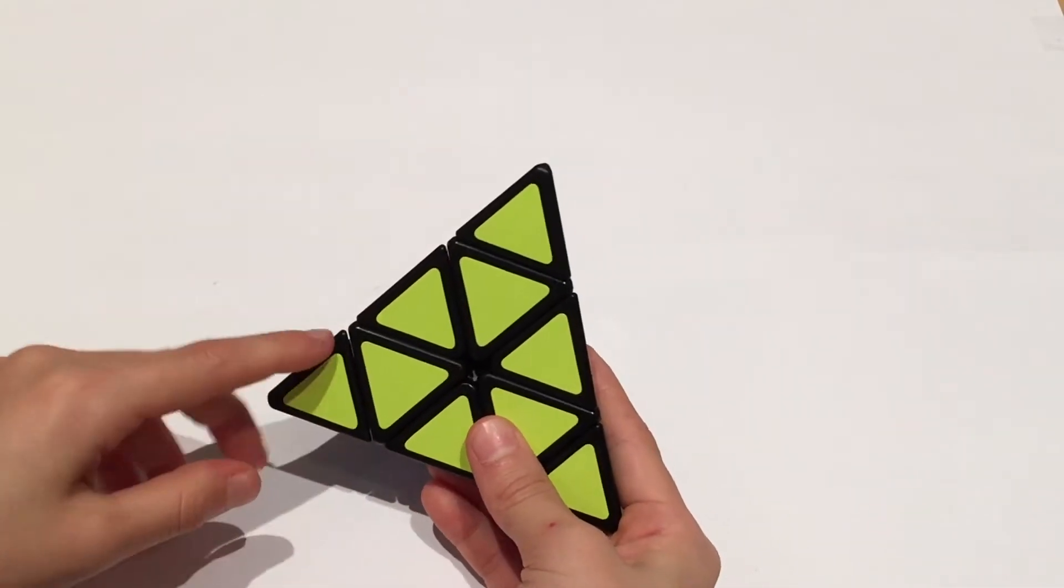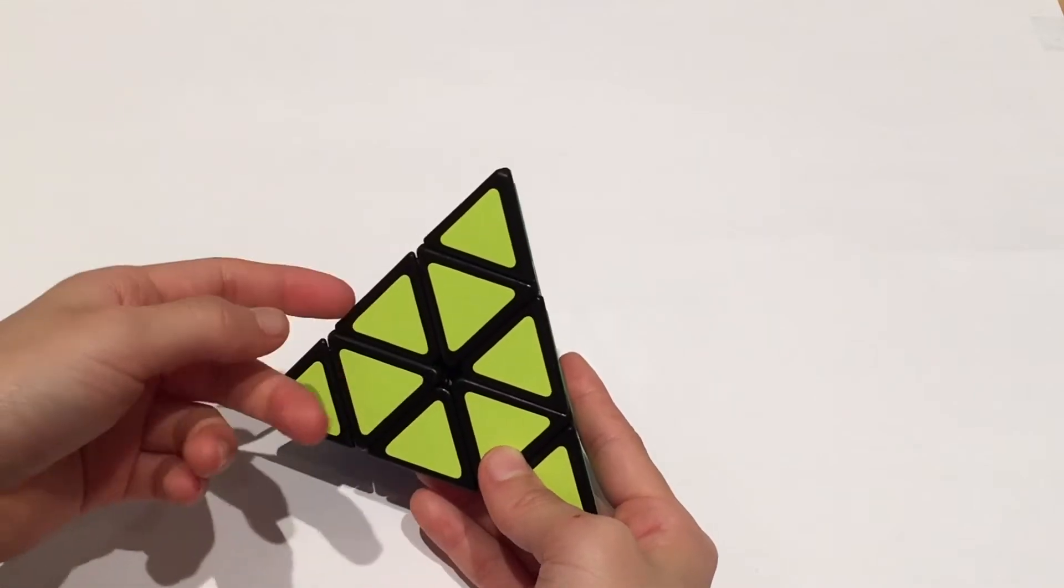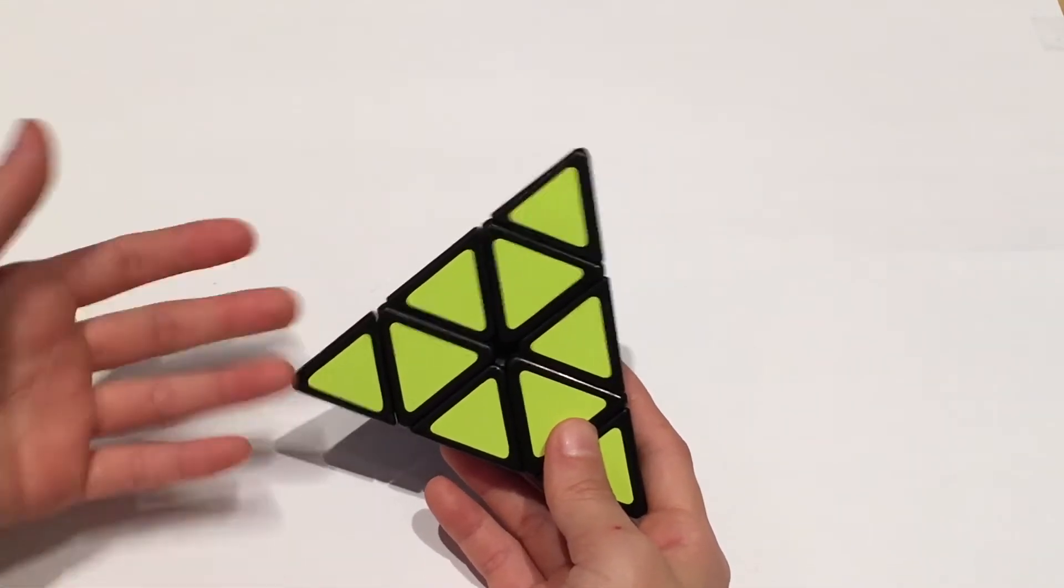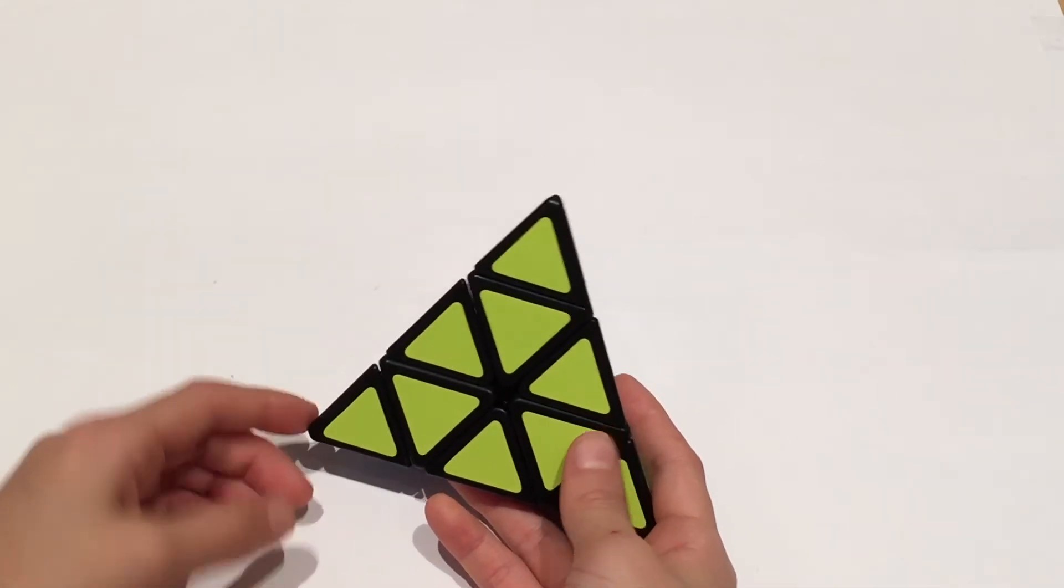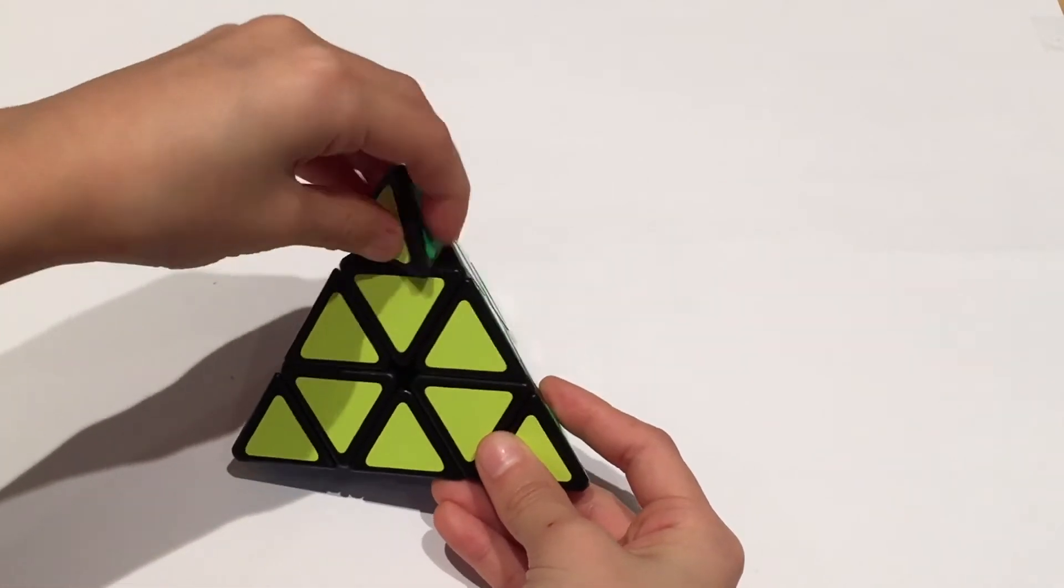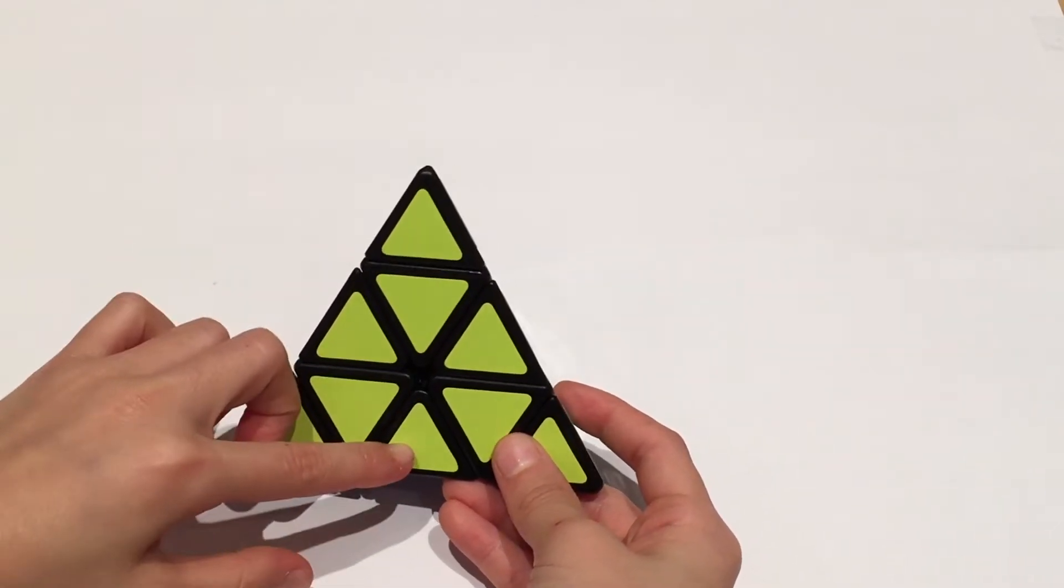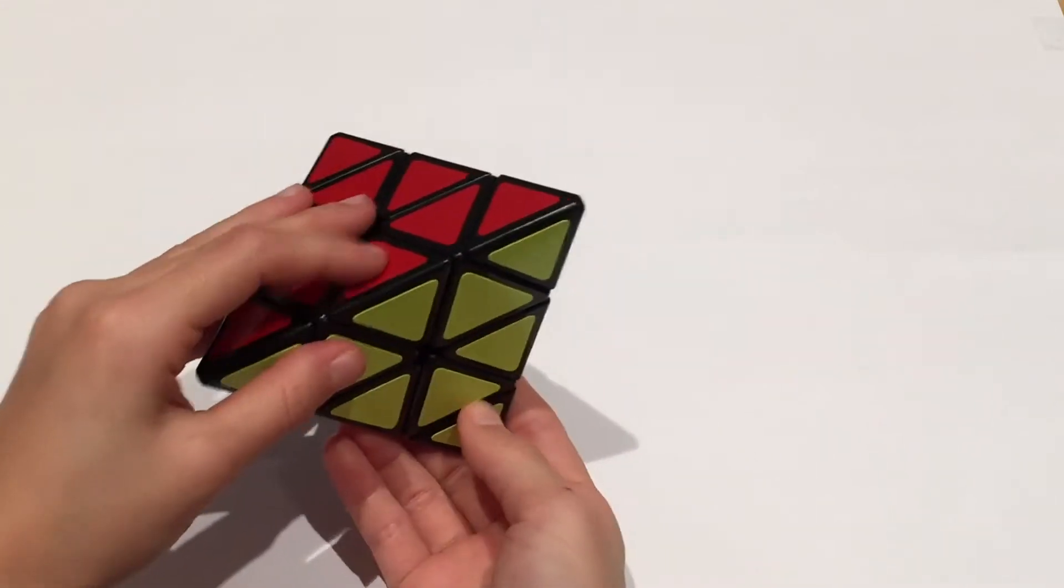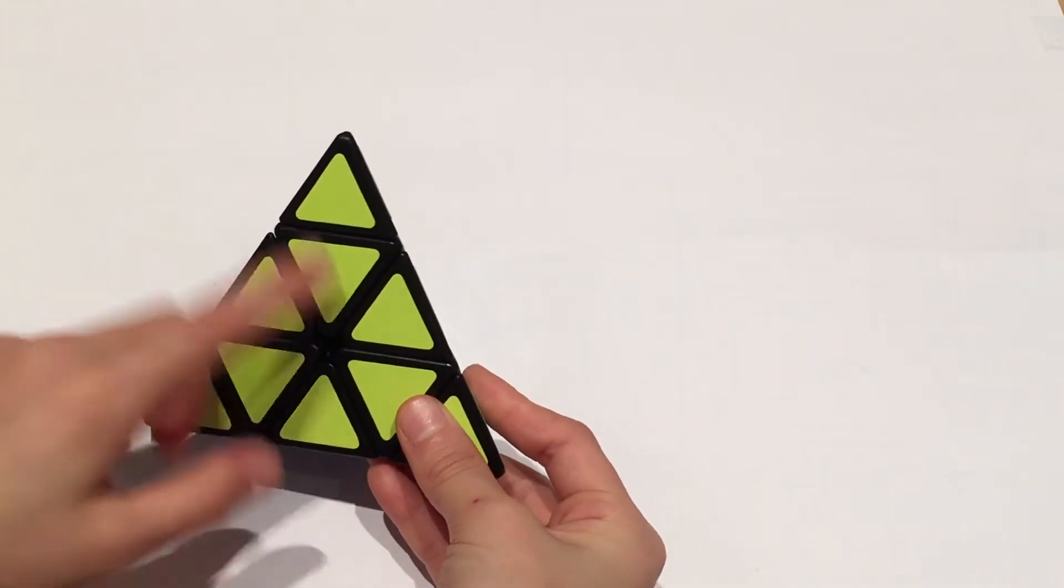So now I'm going to be naming each of these pieces so that I don't say like you want to move this piece here, because that won't be really straightforward to you guys. So this is called a tip. Well, all these are tips. These are centers. These are centers. And then these with two colors on them are edges.